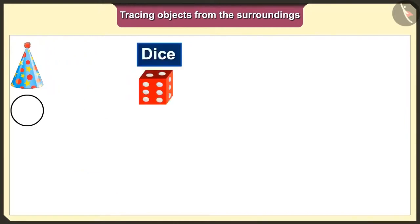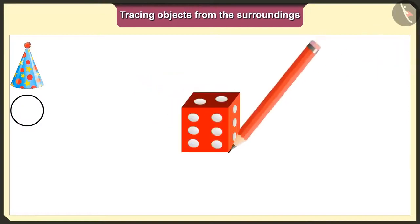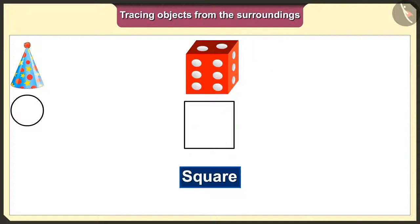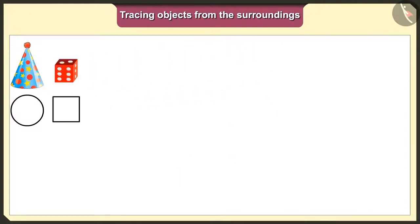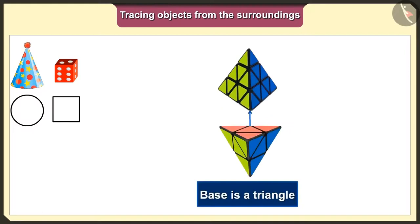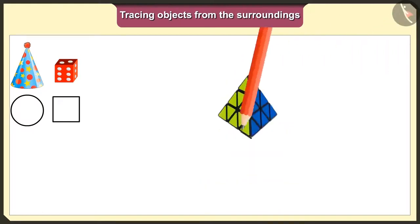Now we will trace the dice. This dice's base is a square. So we will get a square shape when we put it on paper and trace it.